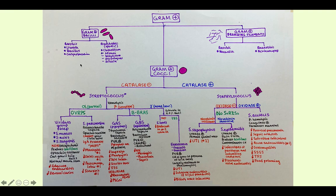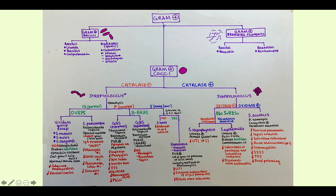This is a good algorithm detailing the gram-positive cocci. Know that catalase positive is synonymous with staph when we're talking about gram-positive cocci, and catalase negative is synonymous with strep. Staph are clusters; strep are chains. Once you know you're dealing with strep, you plate it on sheep blood agar and look for the hemolysis pattern. What we're talking about here is gamma hemolytic, so you're not going to see any hemolysis. We call it gamma hemolytic, but it's actually not hemolytic at all — that's just how it's classified.